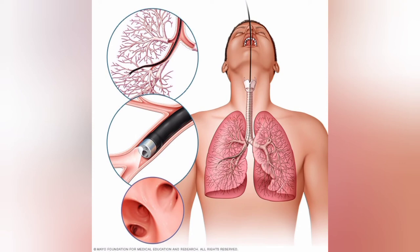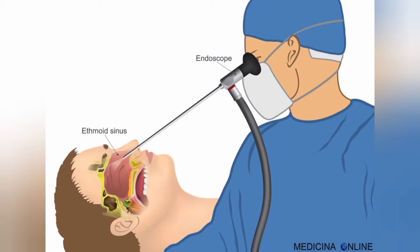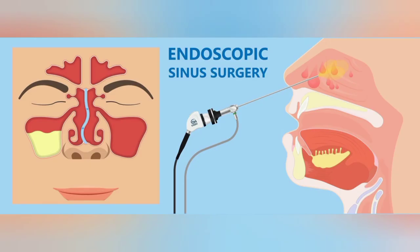Next, a fibroscope is also inserted through the nose or mouth, but it is designed especially to examine the respiratory tract, which includes the nose, mucous membrane, and throat. Fibroscopy helps doctors diagnose sinusitis, stuffy nose, sleep apnea, tumors, deviated nasal septum, nasal polyps, and vocal cord cysts and tumors.